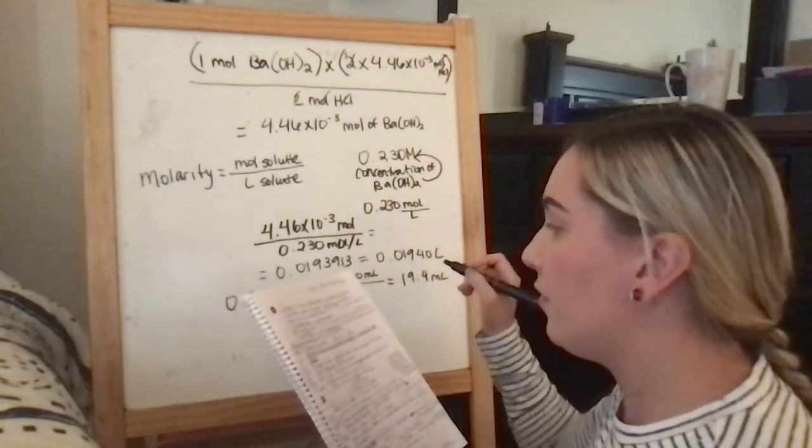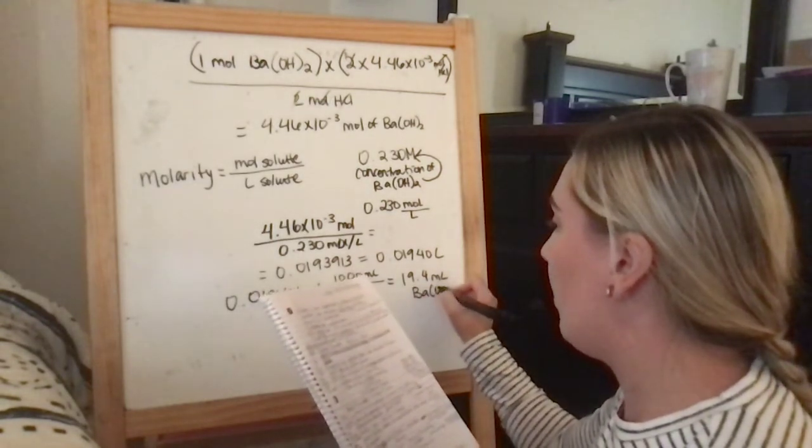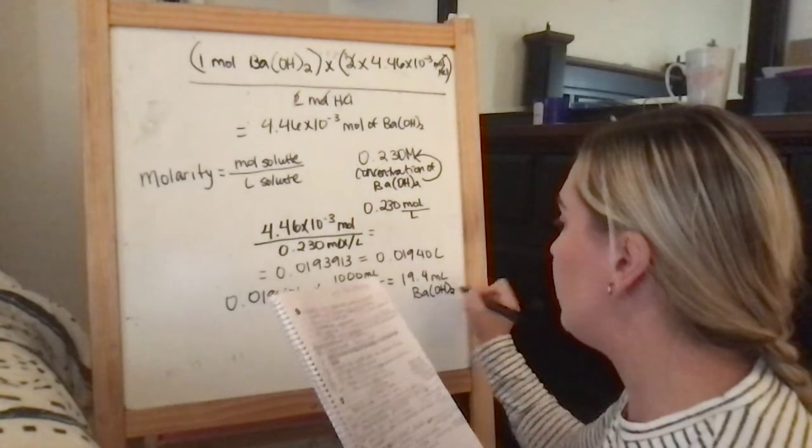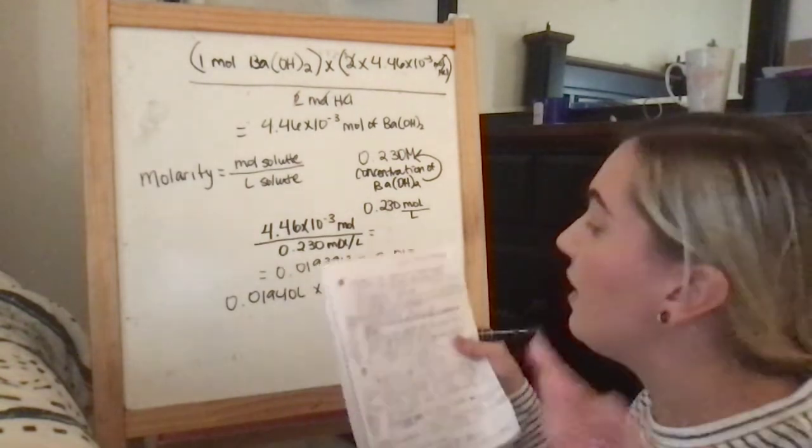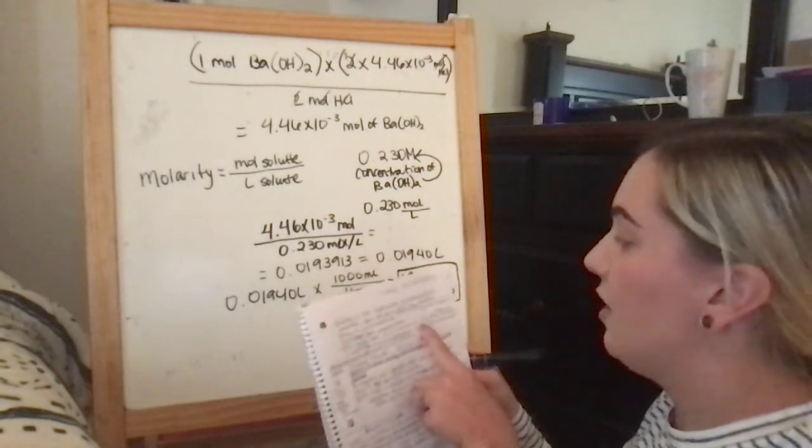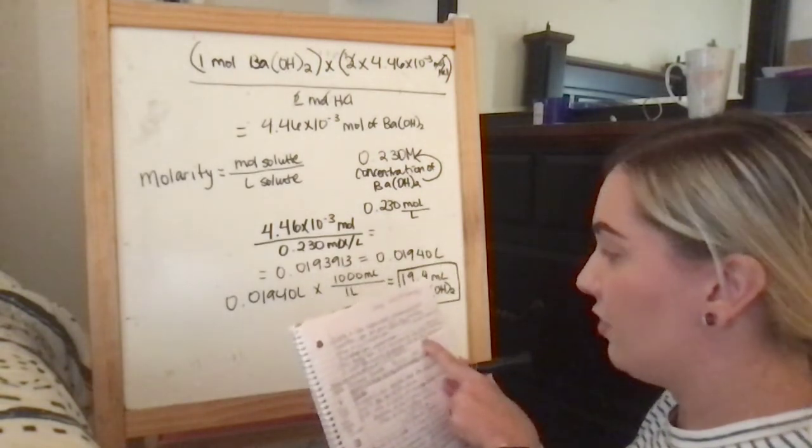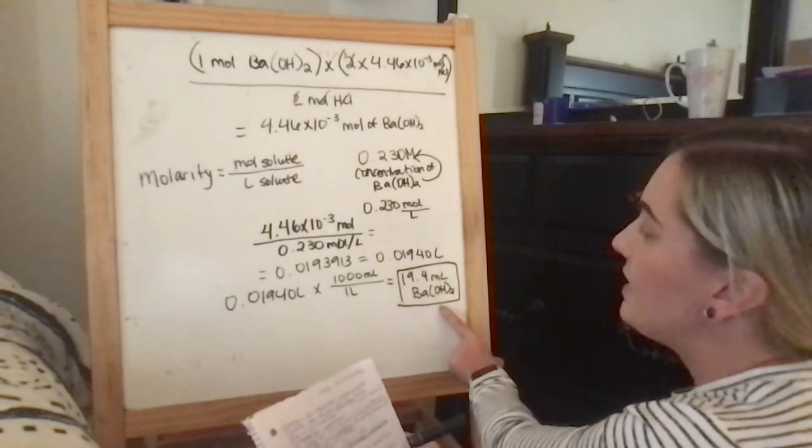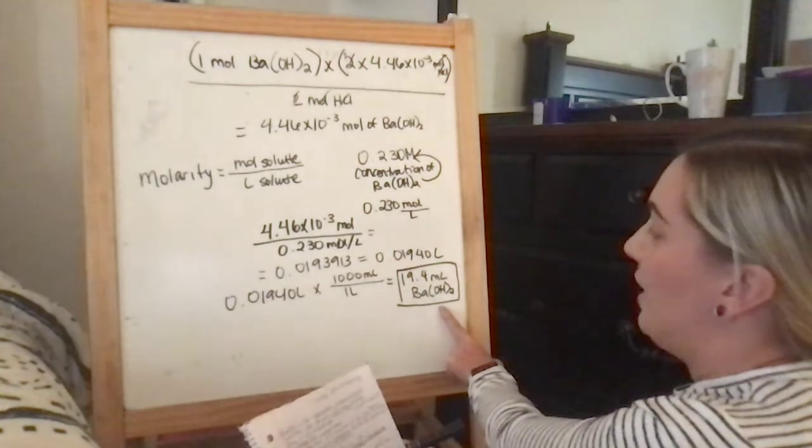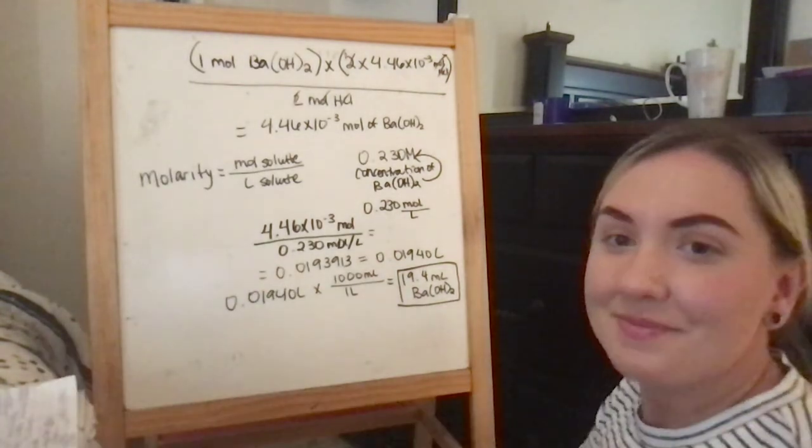And this is Ba(OH)2. So, the question says, how many mL of a solution of barium hydroxide do you need to neutralize all of the hydrochloric acid produced? And my answer is 19.4 milliliters of barium hydroxide. Thank you.